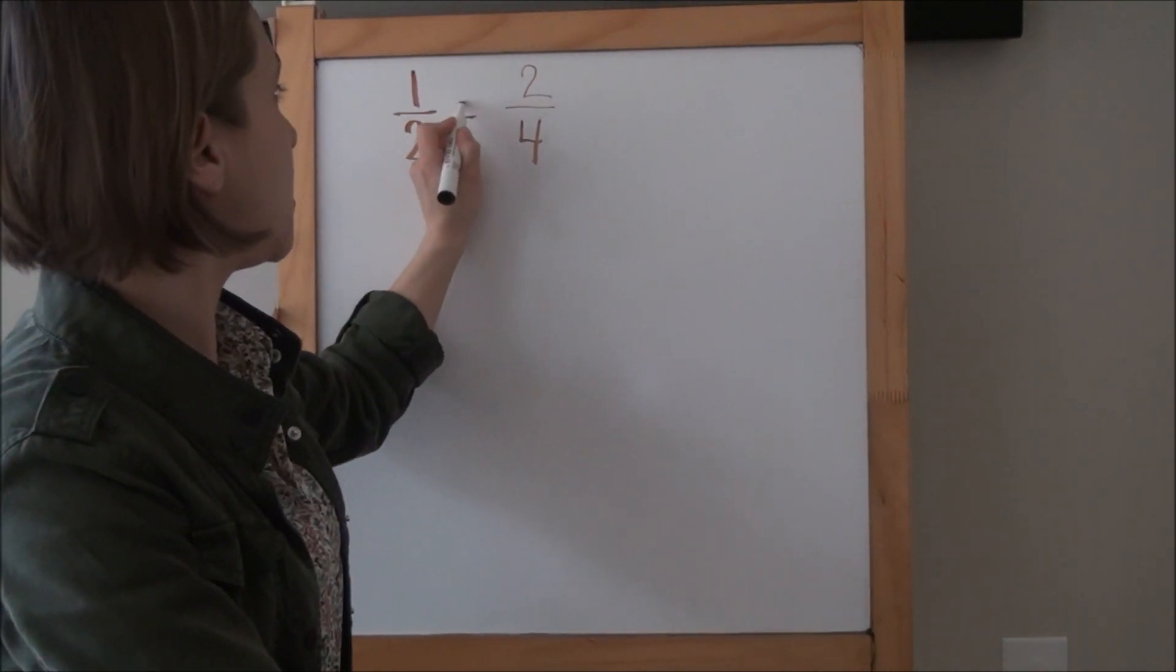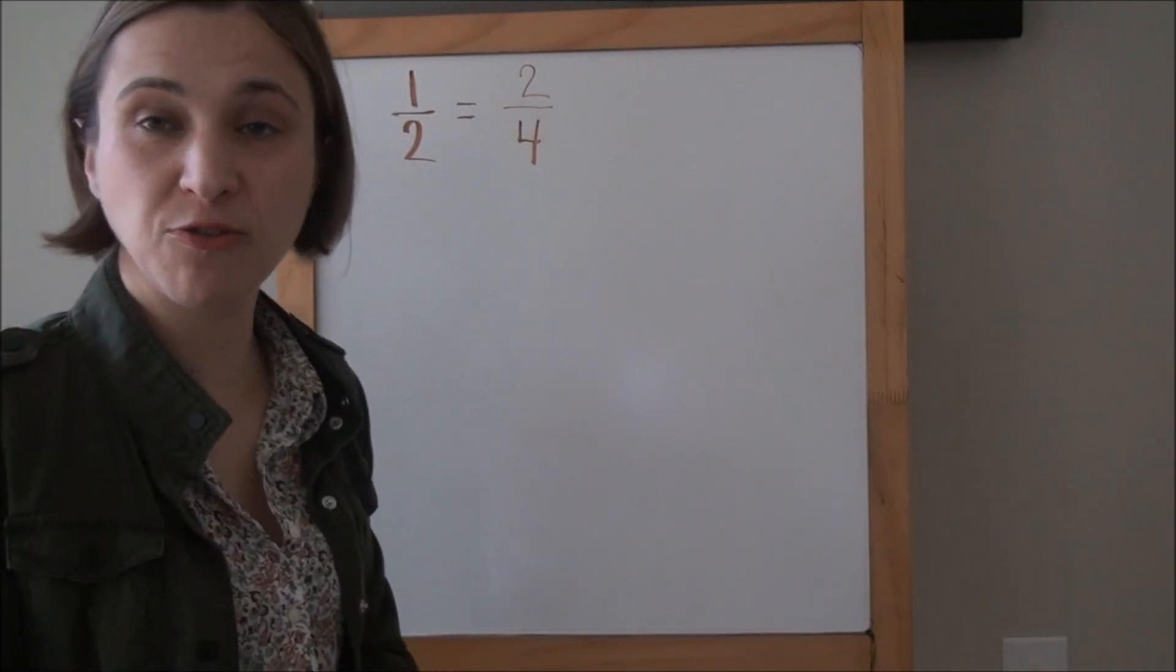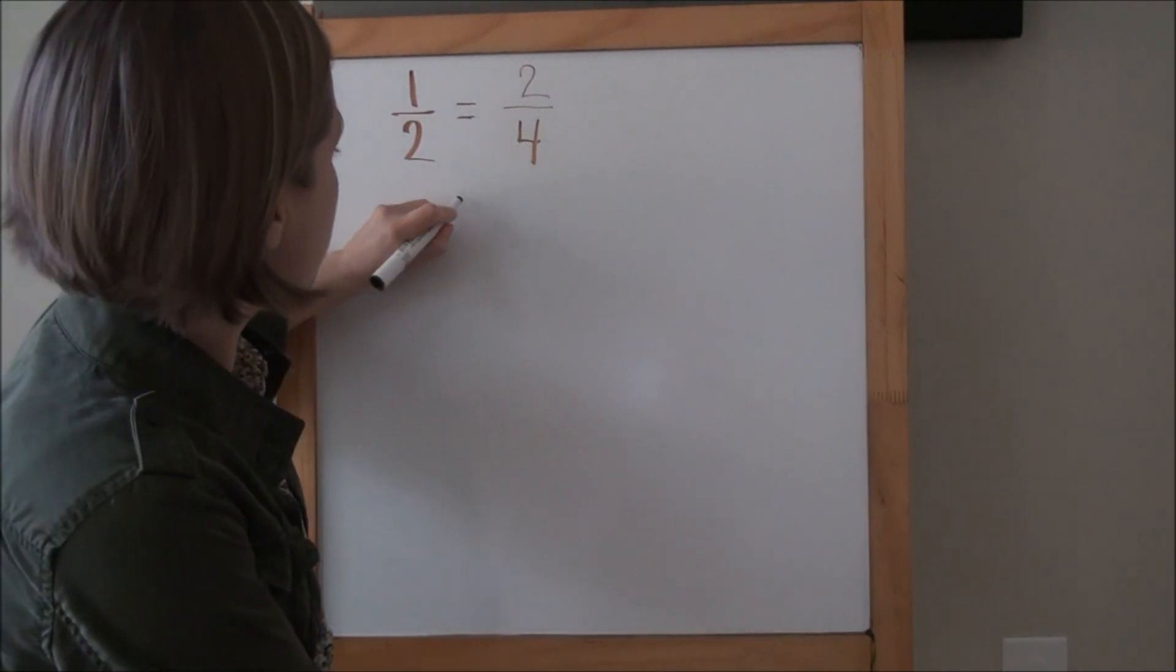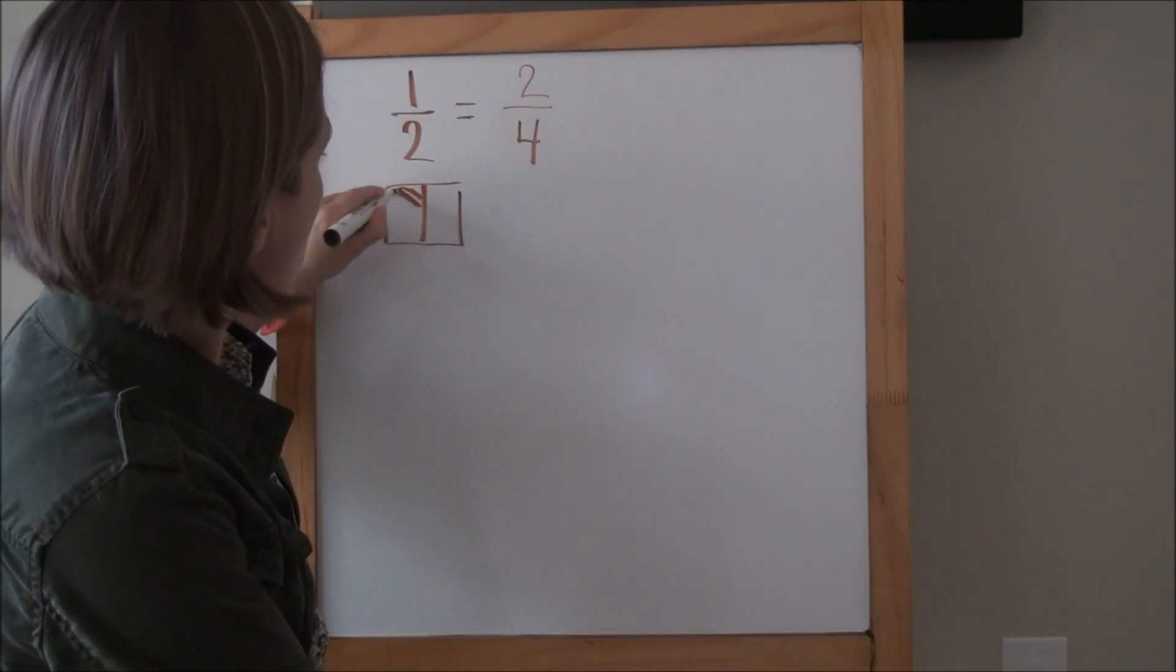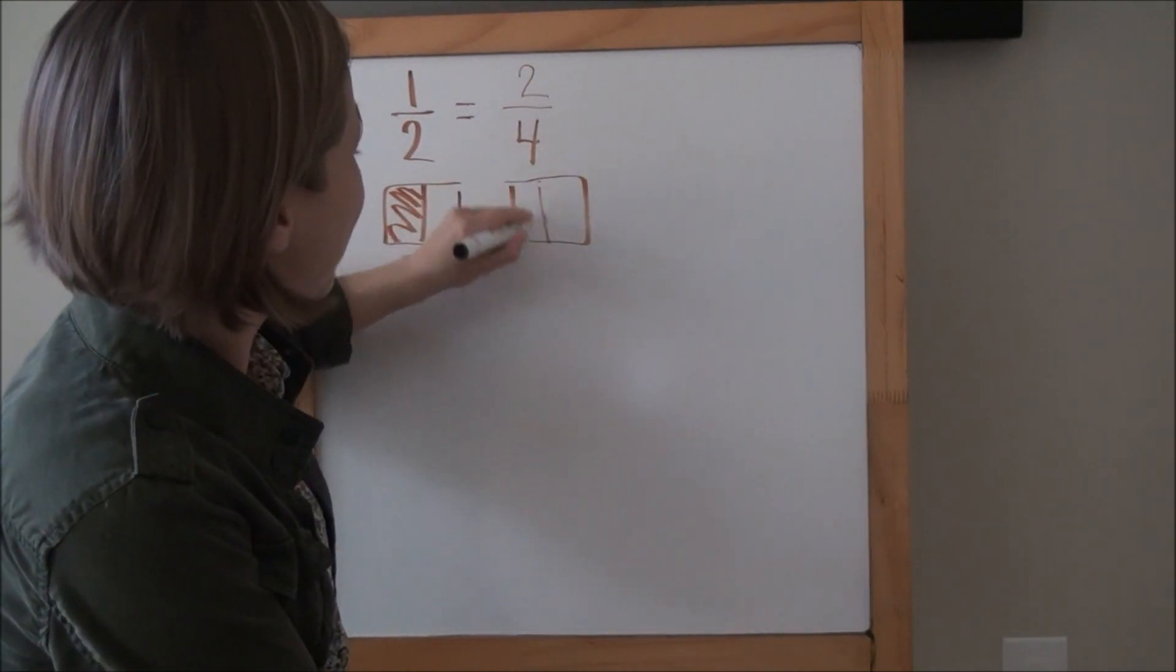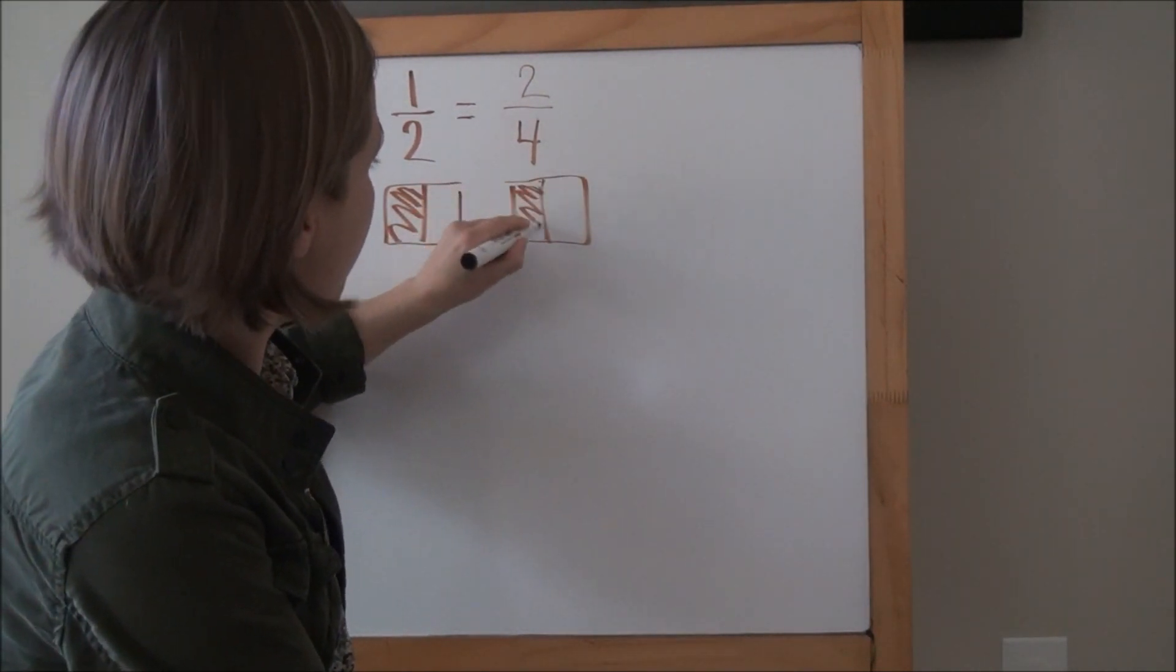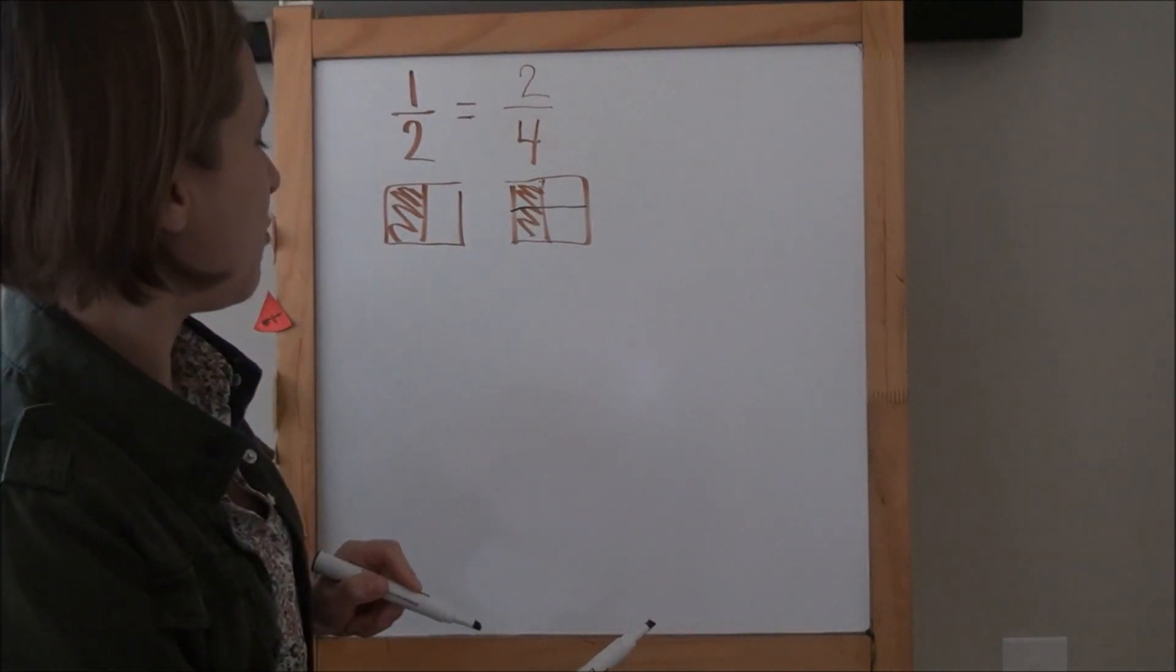Doubling those parts ended up also doubling the parts that were colored. So instead of having one of two parts colored, now we have two of the four parts colored. So what you're telling me is one-half is really the same amount as two-fourths. It just looks a little bit different. Let me see if I could draw a picture to show this. What you said was we had one-half and we still have one-half. It's just that we doubled the number of parts when we folded it.